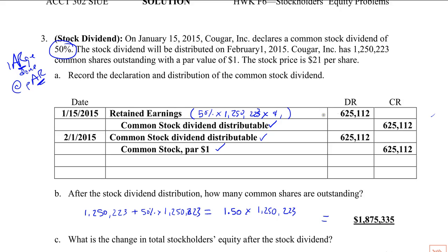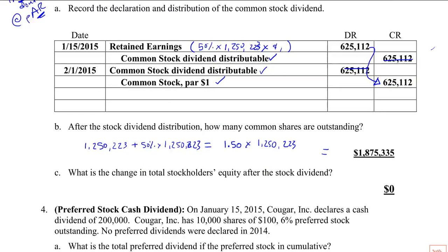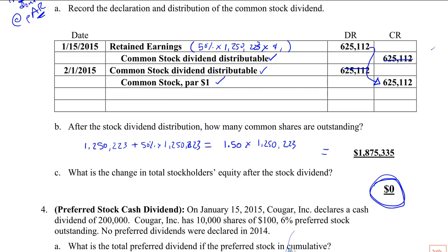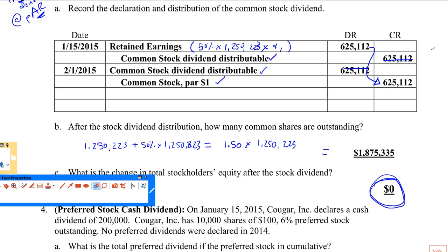This is sometimes called the capitalization of earnings, because what's happened is you've taken something out of retained earnings and put it into a contributed capital account. What is the change in total stockholders' equity after a stock dividend? Zero. I don't even like to think of it as a real dividend, because it doesn't change total assets and it doesn't change total stockholders' equity.